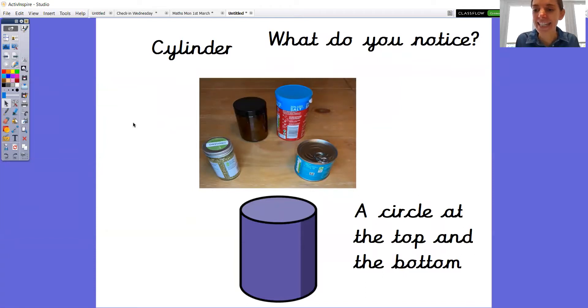Do you remember what this shape is called? Well done if you said cylinder. Let's say that one together. Cylinder. What do you notice about this shape? It's got a circle at the top and a circle at the bottom. And remember on Monday we talked about how there were lots of cylinders to be found, especially in the kitchen cupboards.